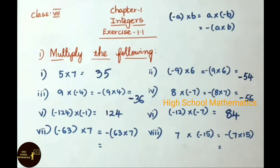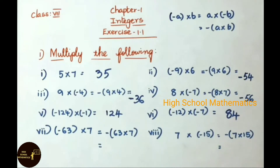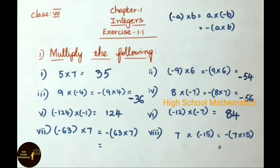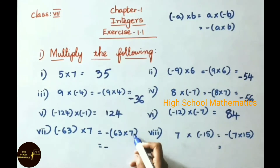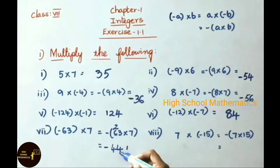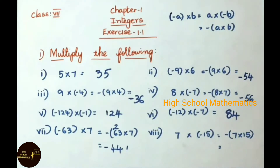See now the seventh sum: minus 63 into 7, that equals to minus of 63 into 7. So write down minus, then multiply 63 into 7, which gives minus 441.